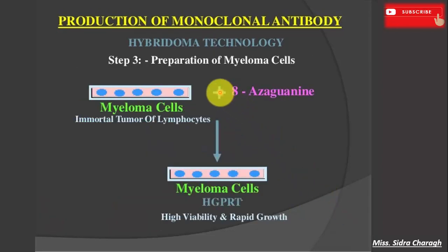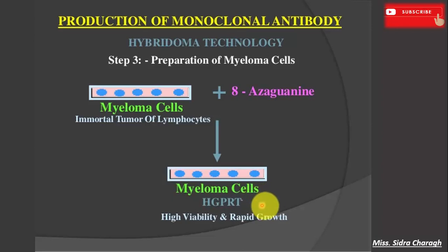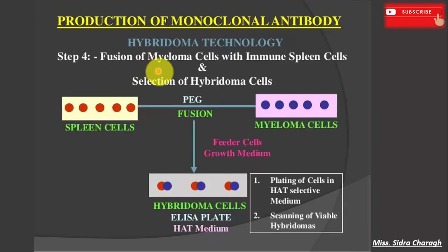The third step is preparation of myeloma cells. Fusing antibody-producing spleen cells, which have a limited lifespan, with cells derived from an immortal tumor of lymphocytes called myeloma cells results in hybridoma capable of unlimited growth. Myeloma cells are immortalized and are cultured with 8-azaguanine to ensure their sensitivity to the hypoxanthine-aminopterin-thymidine (HAT) selection medium. A week before cell fusion, myeloma cells are grown in 8-azaguanine and must have high viability and rapid growth. The HAT medium only allows fused cells to survive in culture.